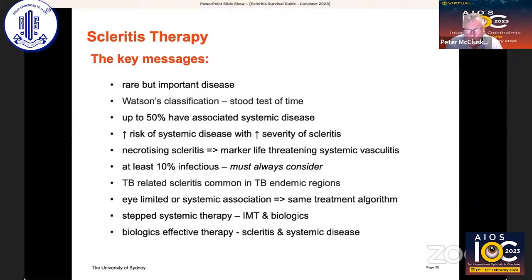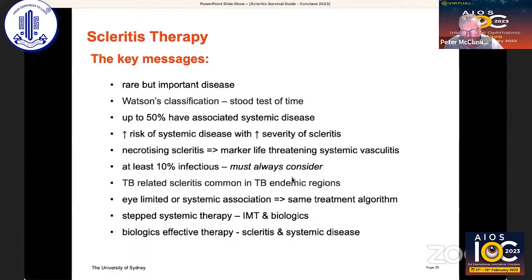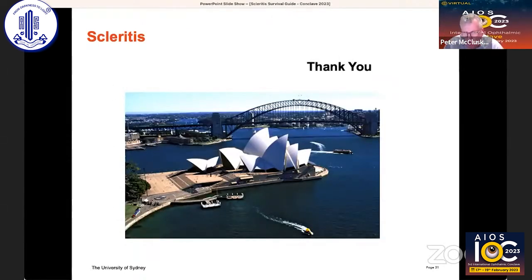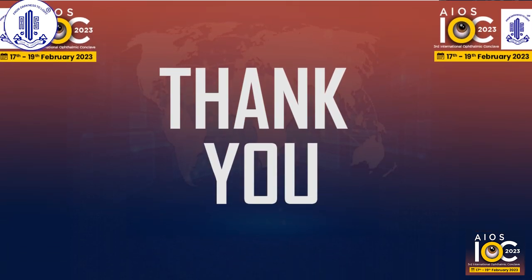The key messages to take home: although scleritis is rare, it's an important disease. Watson's classification is the easiest and simplest way to categorise the types. It's very commonly associated with systemic disease — the more severe the scleritis, the more likely there is to be a systemic association. Necrotising scleritis is a marker of life-threatening systemic vasculitis. Always think about infection and TB. We have a stepped treatment algorithm from NSAIDs through steroids to combination immunosuppressive therapy and biologics. Thanks very much — it's been a pleasure to be part of this symposium.